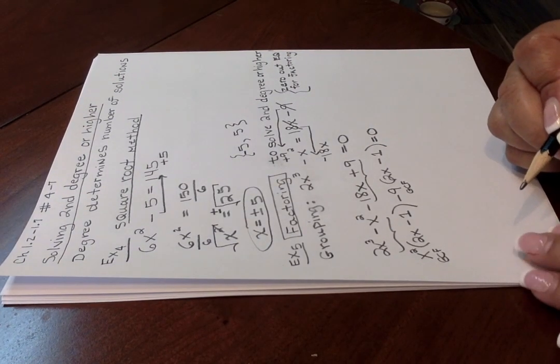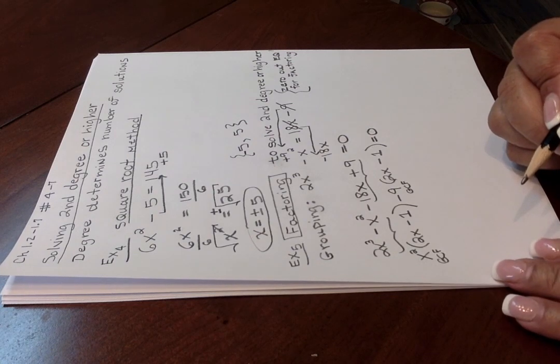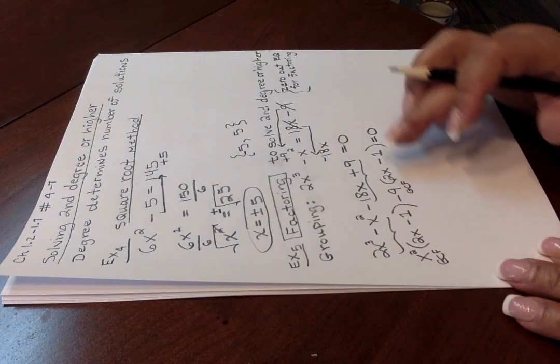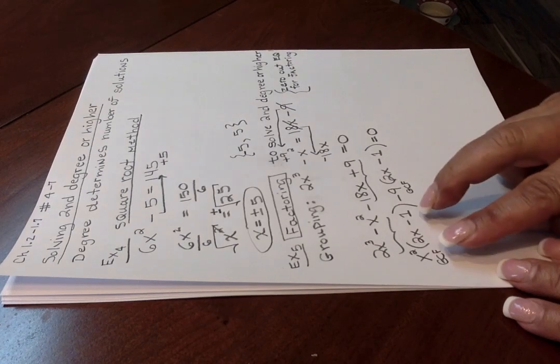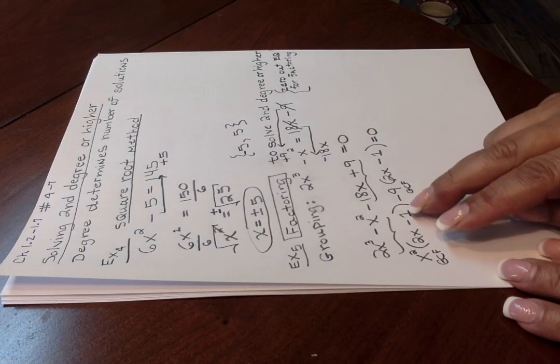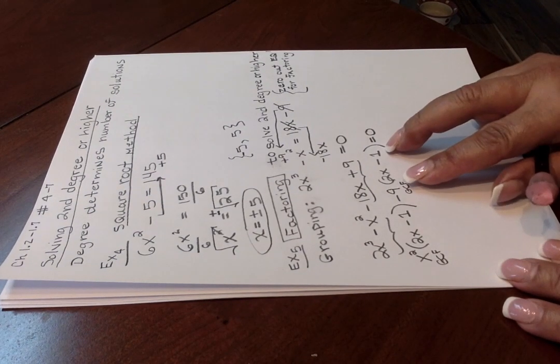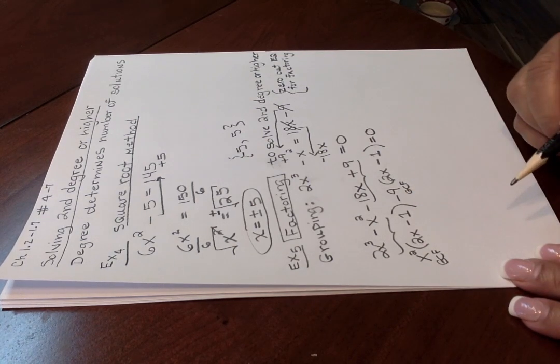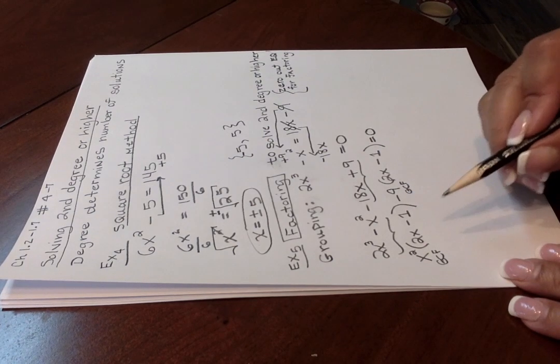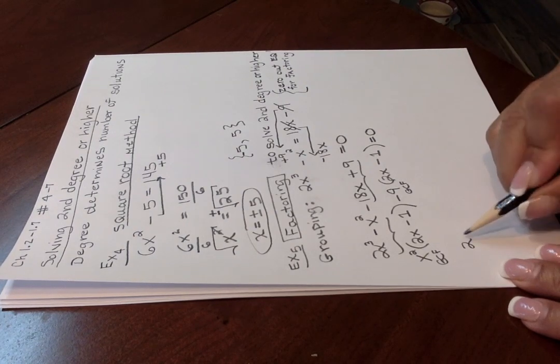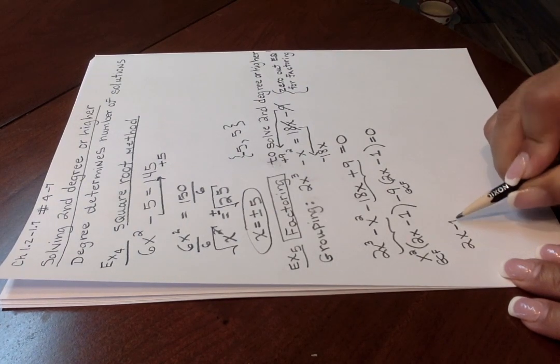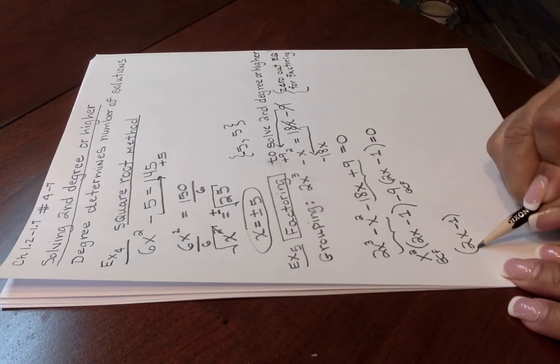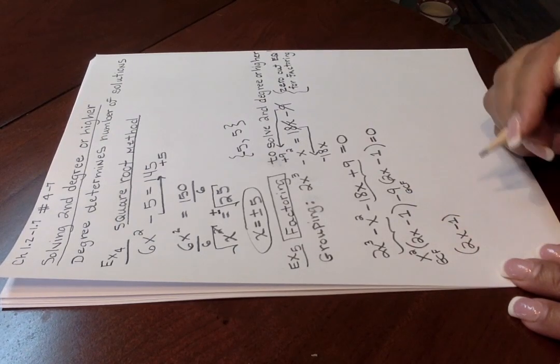Then one more time, taking out your third and final GCF. Now you want to look at this expression as two terms. This would be the first term in front of the minus sign. This would be the second term in back of the minus sign, this minus sign right here. And what they have in common is 2x minus 1. So this will be your third GCF. This 2x minus 1 is common to this term and this term.